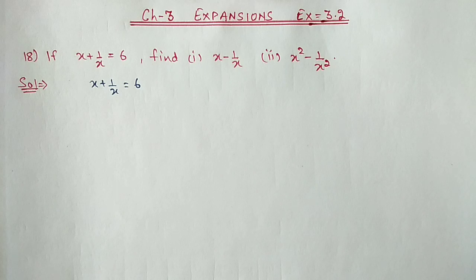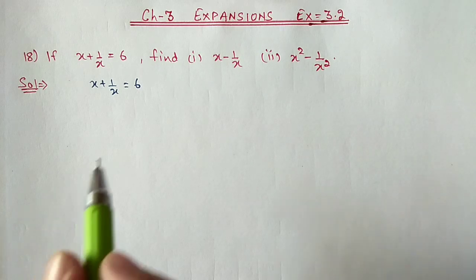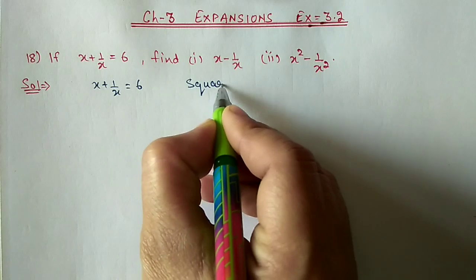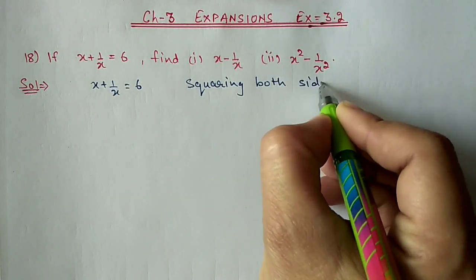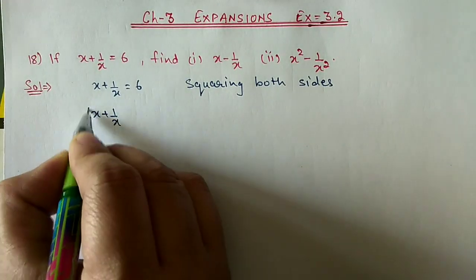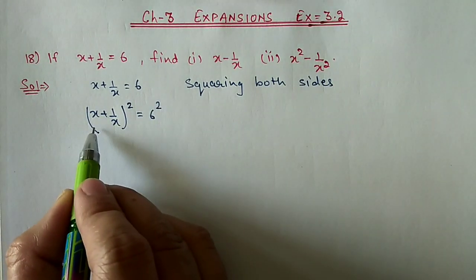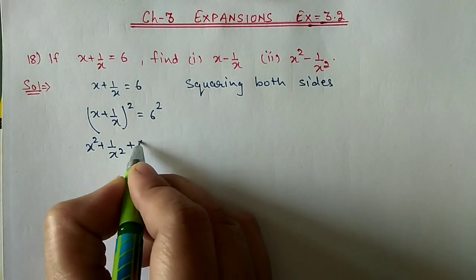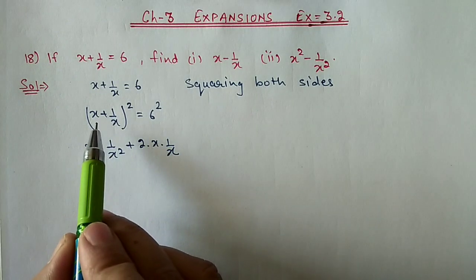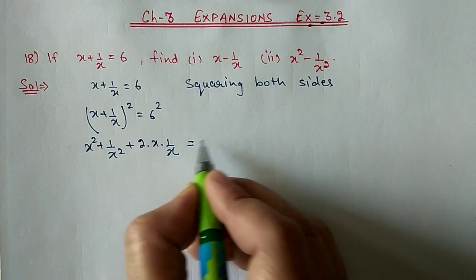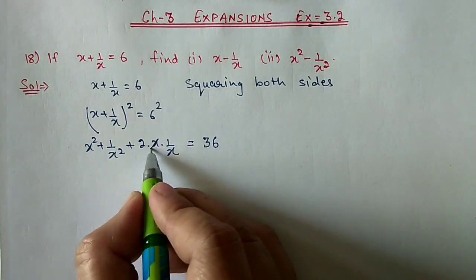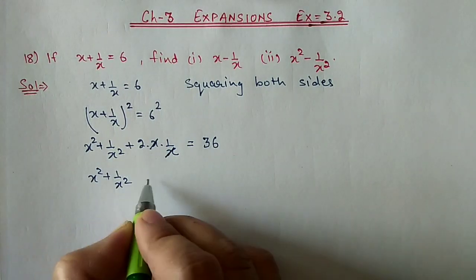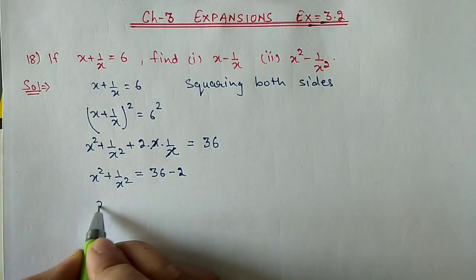We will start from the given value: x plus 1 by x equal to 6. We will do squaring both sides. Then we will get x plus 1 by x whole square equal to 6 square. With the help of the a plus b whole square formula we expand: a square plus b square plus 2a into b. In place of a we have x, in place of b we have 1 by x, equal to 36. Here x and x will cancel out, so we are left with 2. This 2 we shift to the other side for subtraction, so x square plus 1 by x square equals 36 minus 2, which is 34.